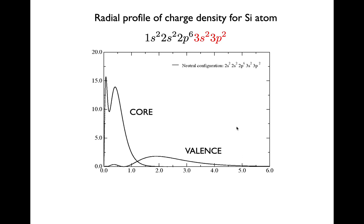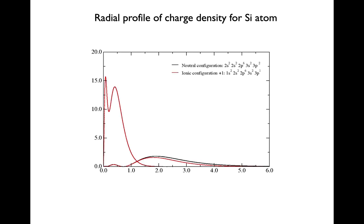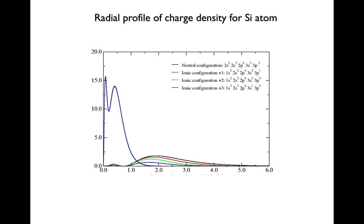Now imagine that you take one electron from the valence complex. Obviously the charge density of the valence part is diminished but the core part stays basically the same. And a similar thing happens when you take up two more electrons.